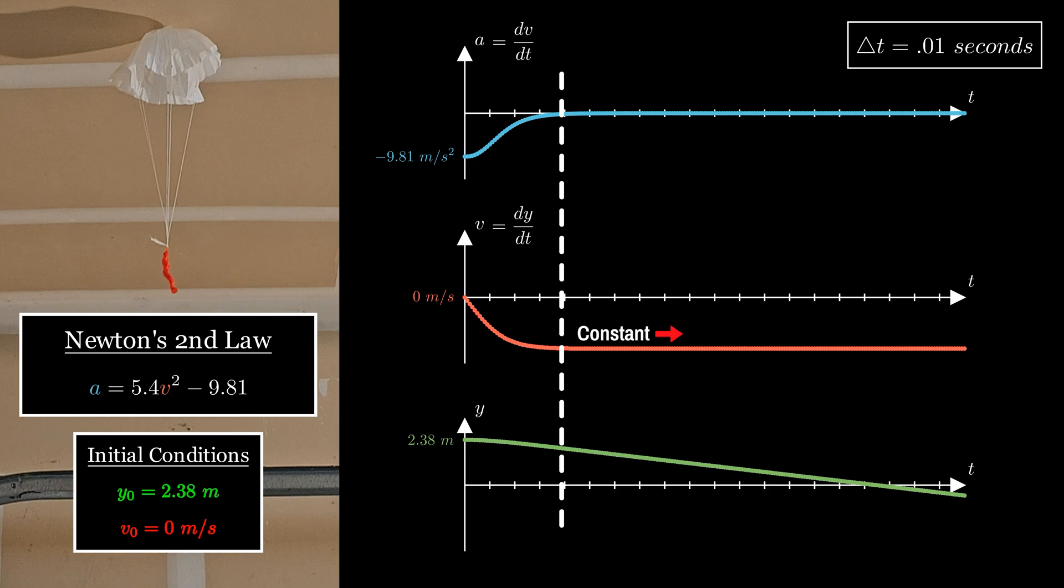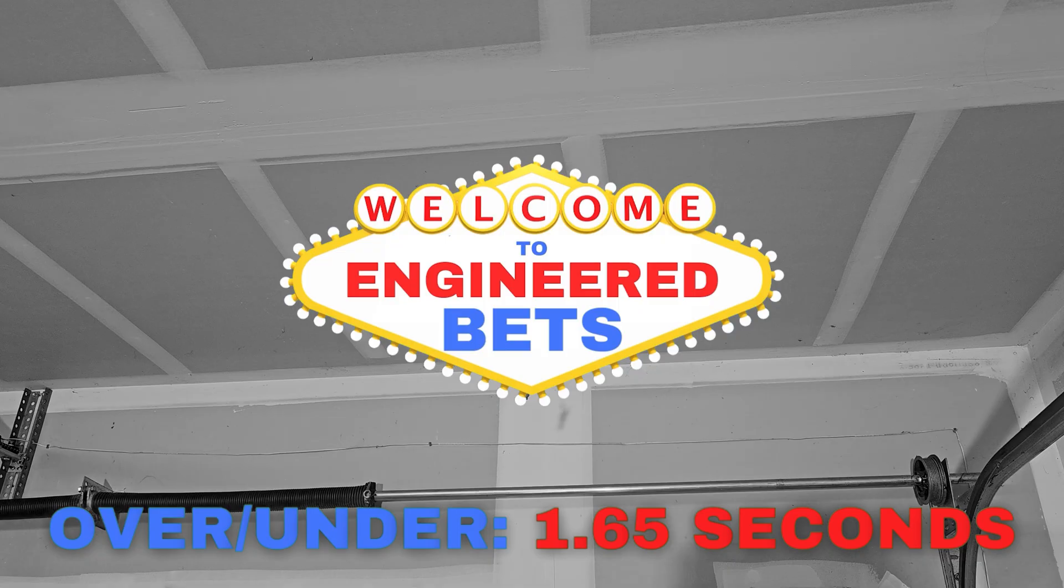From here, his velocity is of course a constant, meaning his position is decreasing linearly until he reaches the ground 1.65 seconds after release, and that's how the line was set.